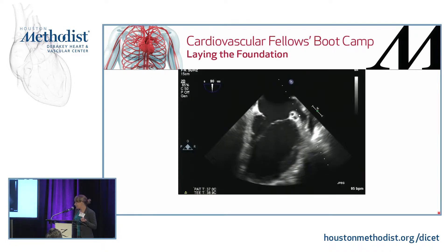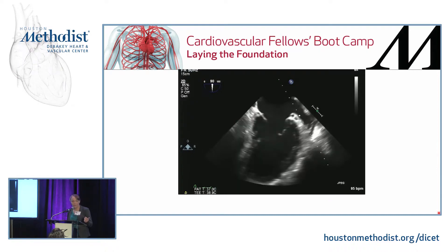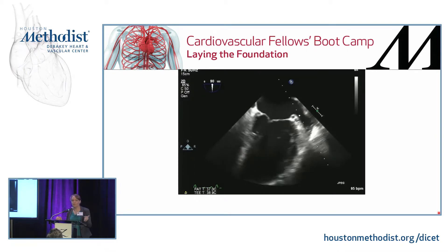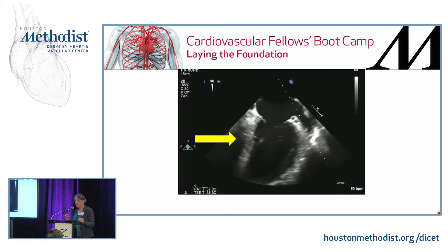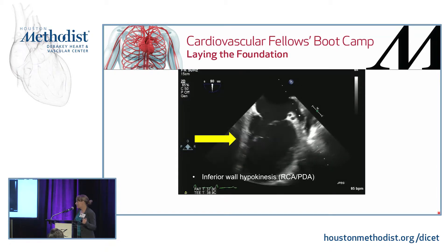Looking at the first TEE clip: for orientation, the left atria is in the foreground and the left ventricle distally, cut at 90 degrees — inferior wall toward the back, anterior wall out front. Looking at the anterior wall versus the inferior wall, if you squint your eyes and look at those walls qualitatively, you can appreciate that the back wall or inferior wall doesn't look quite as kinetic as the anterior wall. The inferior wall appears hypokinetic — less mobile than the anterior wall.